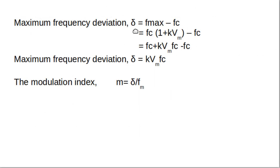The maximum frequency deviation Δ equals fmax minus the original carrier frequency fc, which gives fc·(1 + k·Vm) − fc = k·Vm·fc. So maximum frequency deviation Δ = k·Vm·fc, and the modulation index M equals that deviation Δ divided by FM.